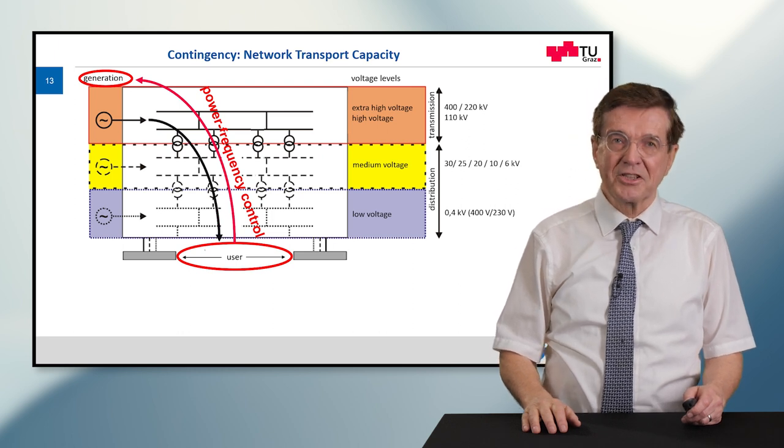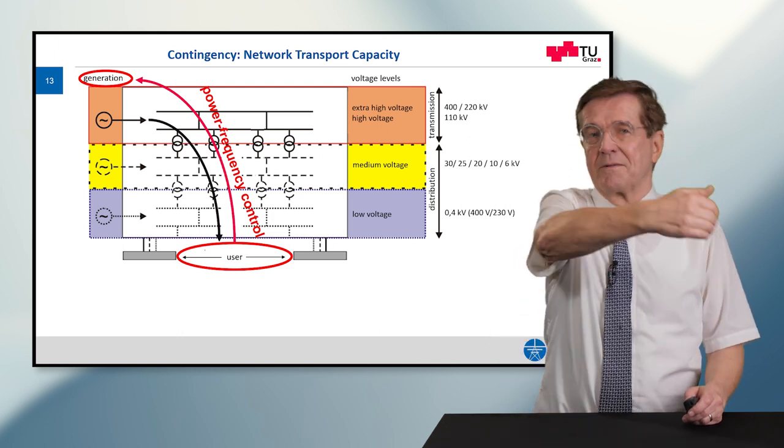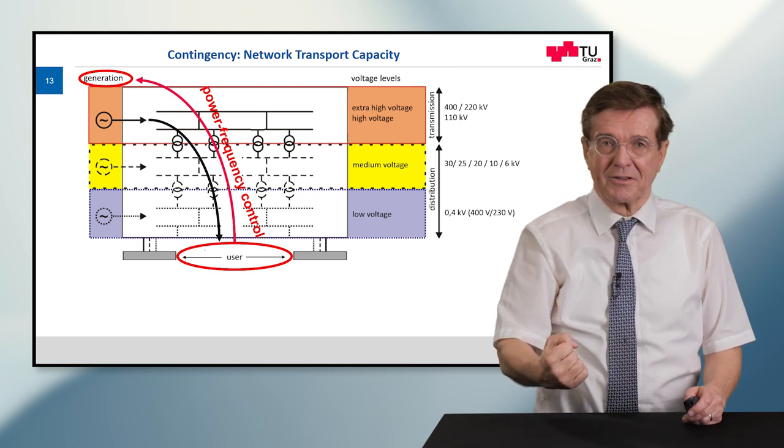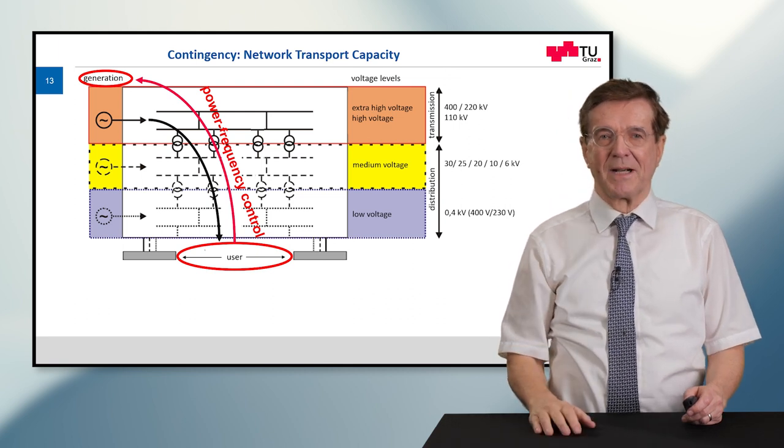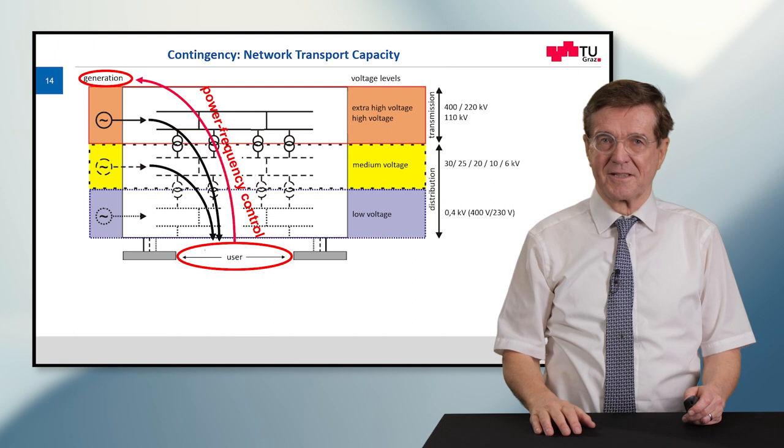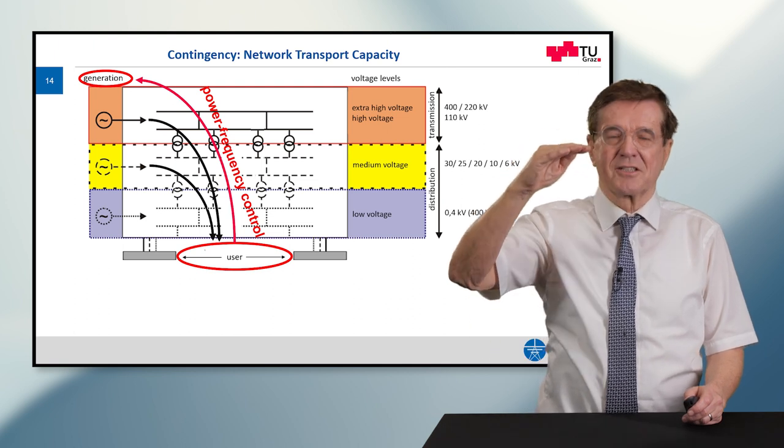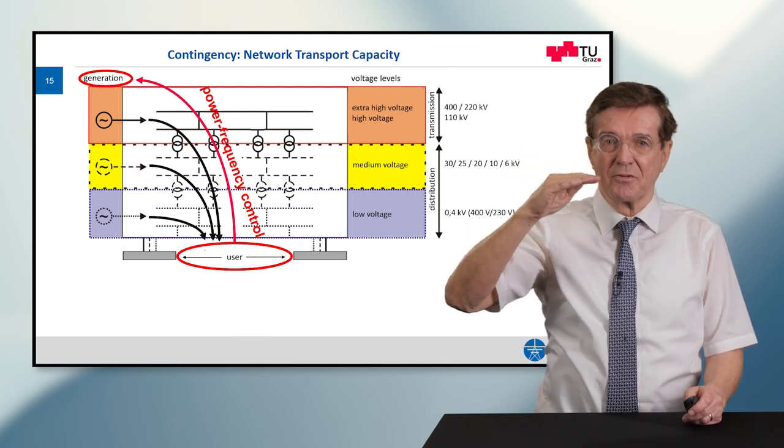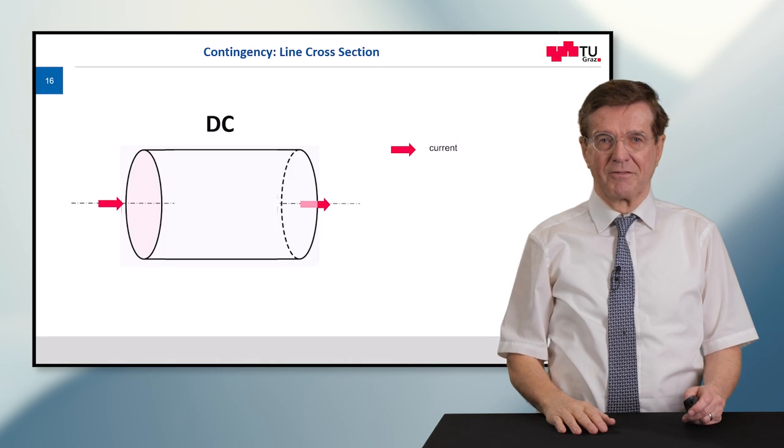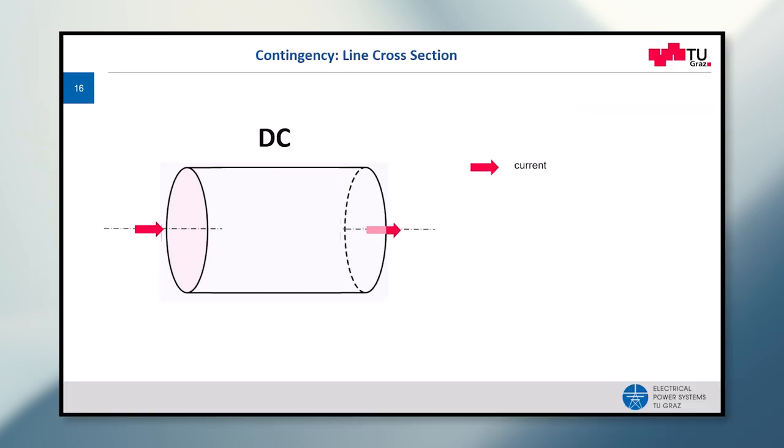Now the generation converts other forms of energy into electrical energy and sends this energy back to the users through extra and high voltage level, through medium voltage level and low voltage level. Now let's concentrate on a line cross-section which may impose a contingency on the transport of electric power.